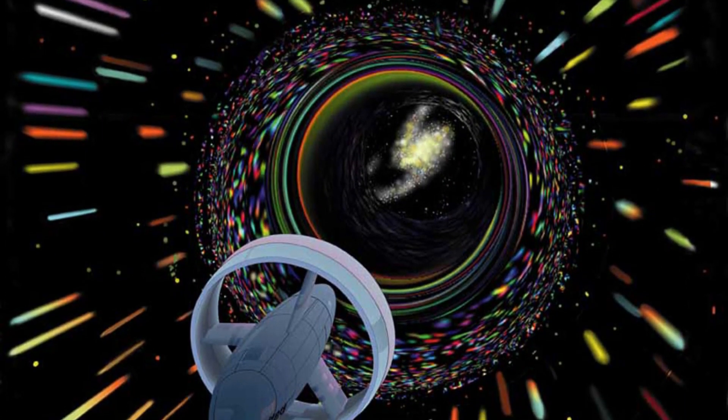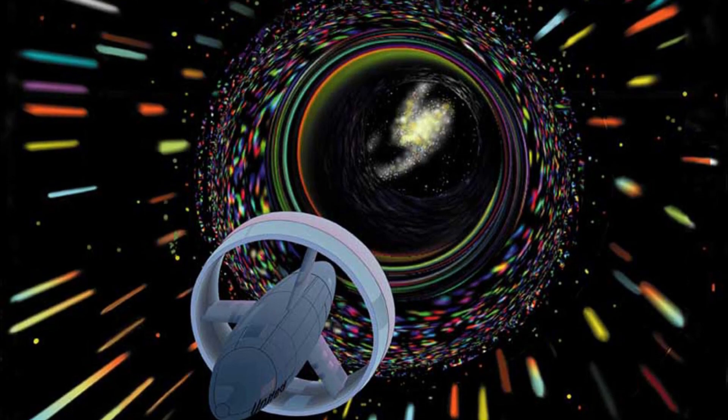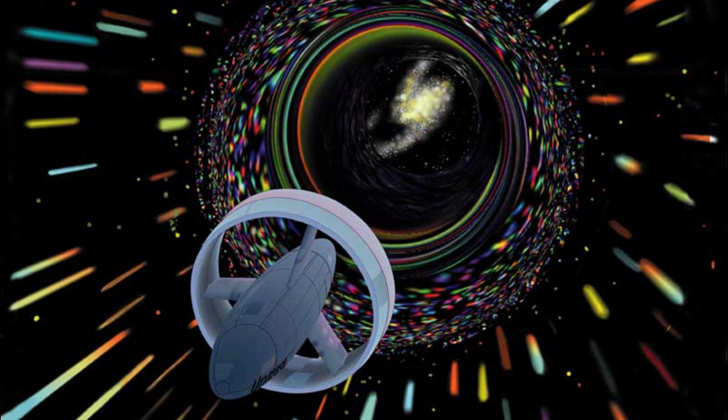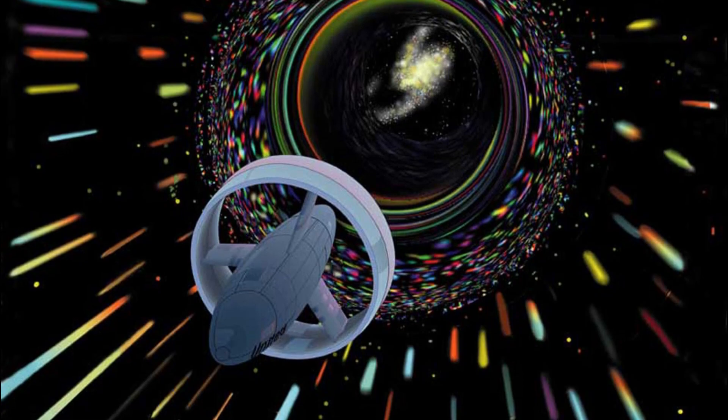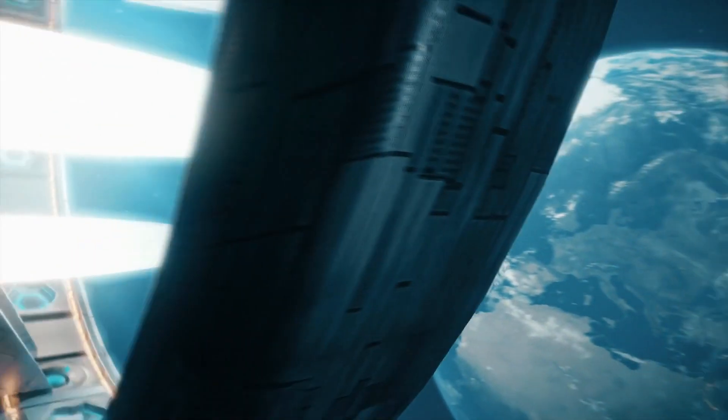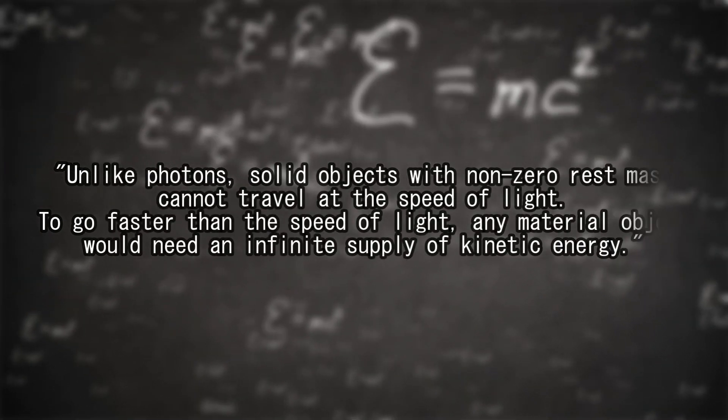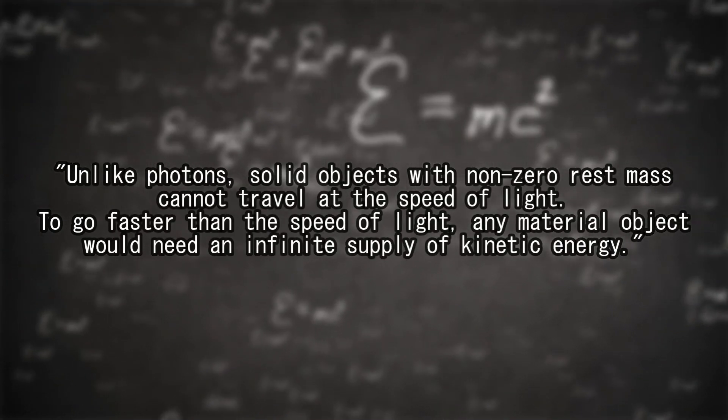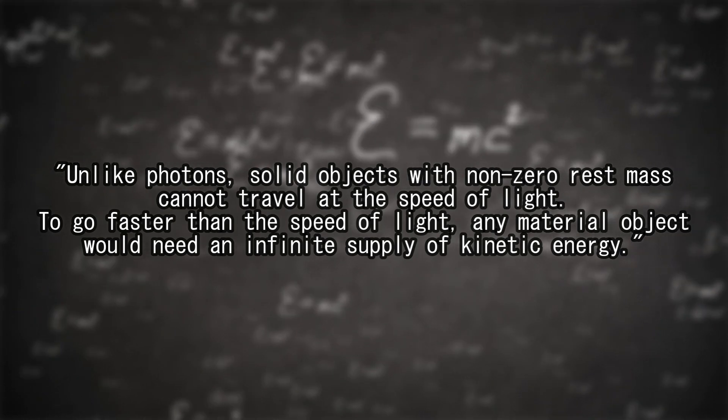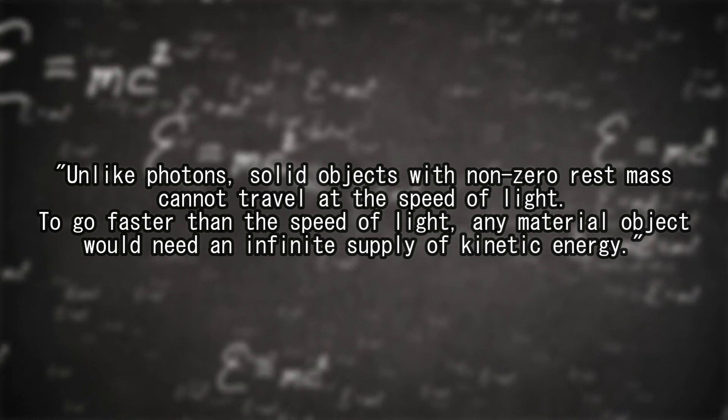The Alcubierre Drive transforms the space surrounding an object such that it may reach its objective quicker than light would in normal space without breaking any physical principles. Objects cannot accelerate to the speed of light in ordinary spacetime. Einstein's special relativity theory states that unlike photons, solid objects with non-zero rest mass cannot travel at the speed of light. To go faster than the speed of light, any material object would need an infinite supply of kinetic energy.